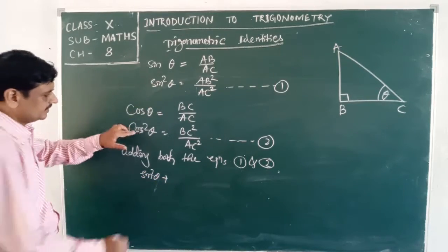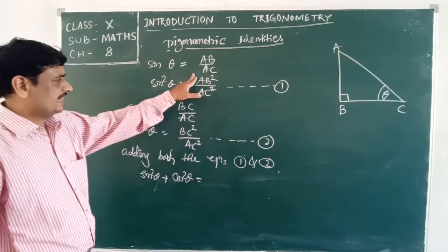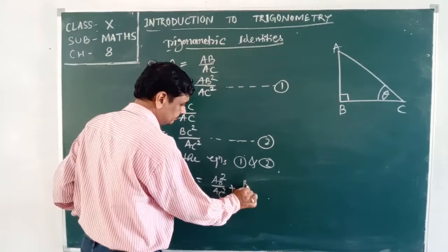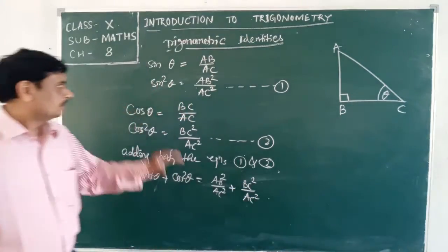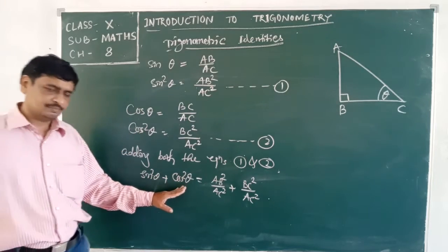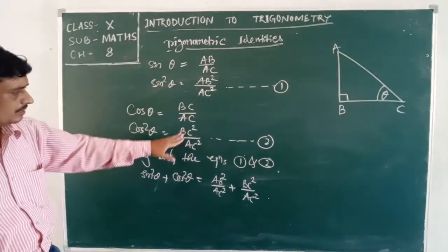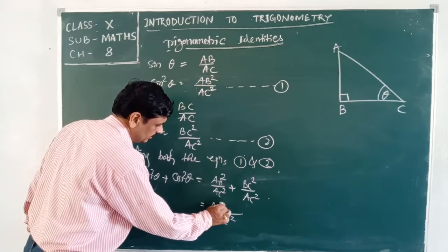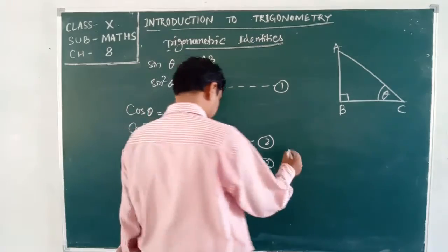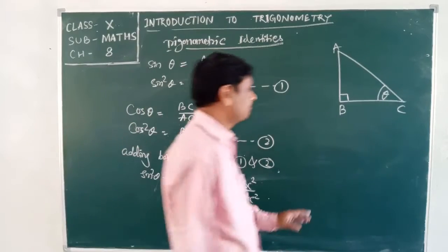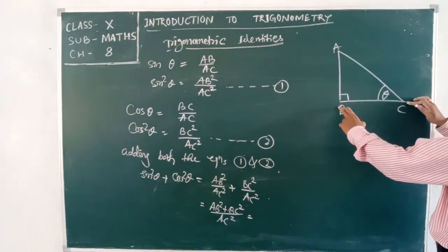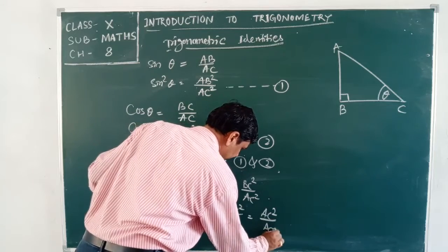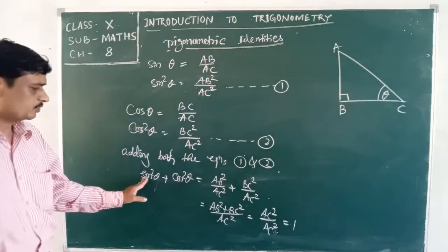sin²θ + cos²θ = AB²/AC² + BC²/AC². Taking LCM as AC², the numerator becomes AB² + BC². By Pythagoras theorem, AB² + BC² = AC². So the expression becomes AC²/AC² = 1. We have shown that sin²θ + cos²θ = 1, which is the first trigonometric identity.